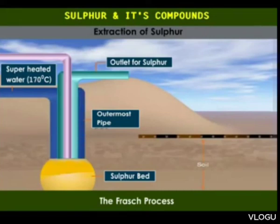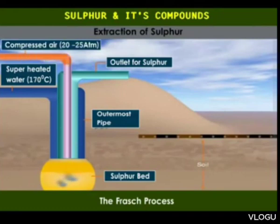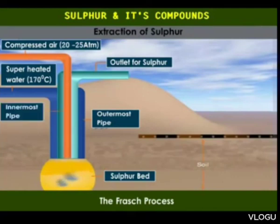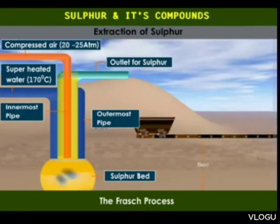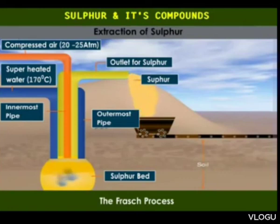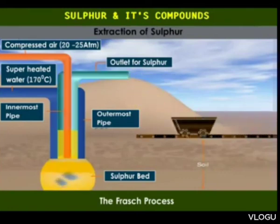The water enters the sulfur bed and melts the sulfur present. Compressed air under a pressure of 20 to 25 atmospheres is pumped through the innermost pipe. This forces the mixture of water and molten sulfur to gush out through the middle pipe. This mixture is collected and on cooling, about 99% pure sulfur gets separated.